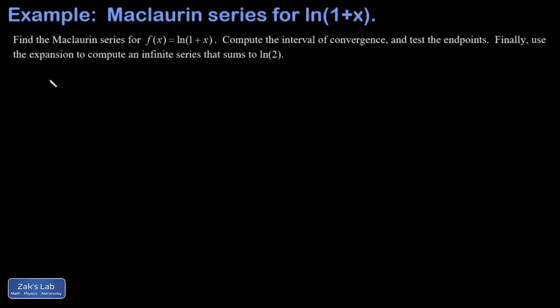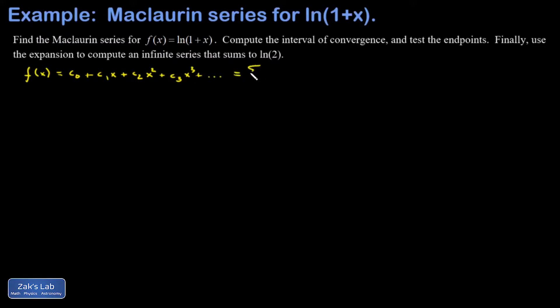In this problem, we're computing the Maclaurin series for the natural log of 1 plus x. So it's a power series centered at 0. Just to remind you of what a Maclaurin series looks like, the proposal here is that we can expand any function as a polynomial expansion, possibly containing infinitely many terms. Written in series notation, I recognize that as a power series centered at 0.